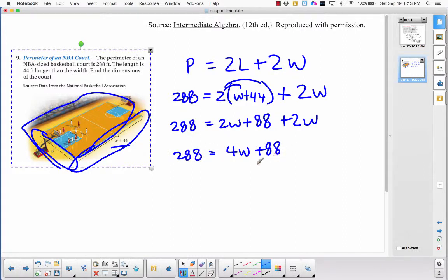And then I'd subtract 88 from each side. So 288 subtract 88 would be 200. And then 4 into 200, I think, goes 50 times.